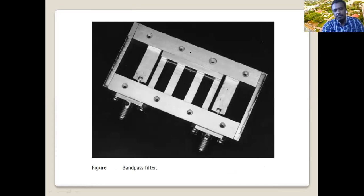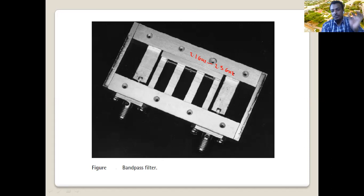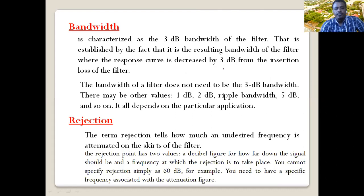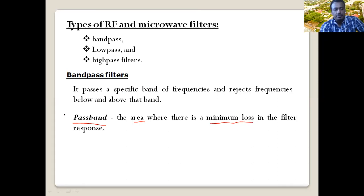When you see a band pass filter, it has a specific pass band — for example, from 2.1 GHz up to 2.5 GHz. All frequencies in this pass band, when the signal passes through the filter, are attenuated by a very small amount called insertion loss. That is the first specification: what is the pass band of our filter.